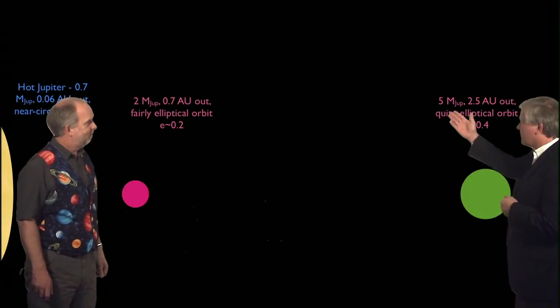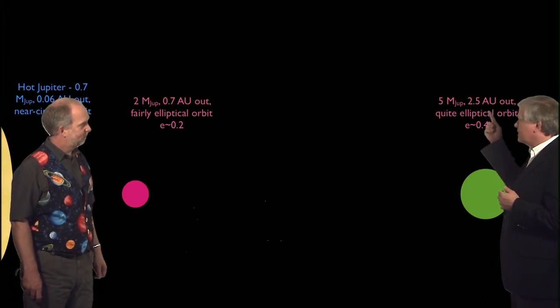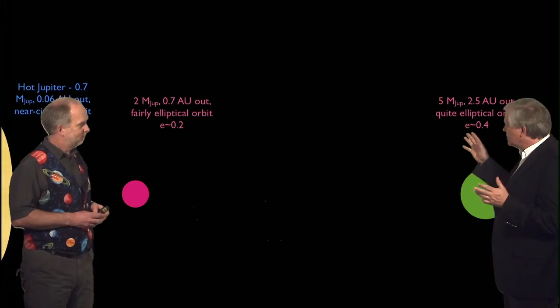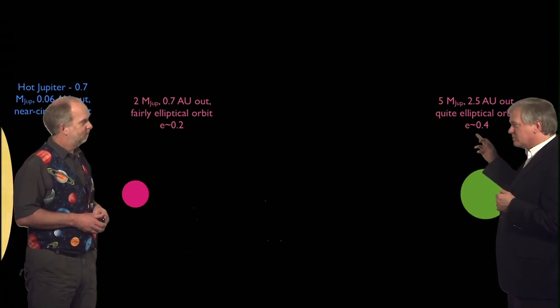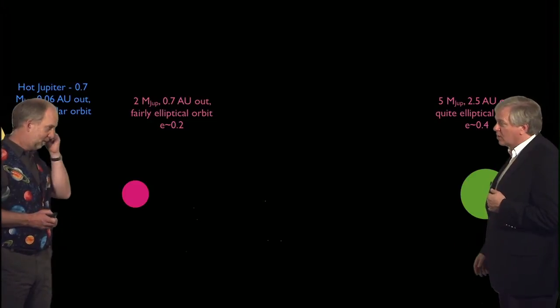Oh, so this is a five times Jupiter, so it's a really big planet. Two and a half AU out, so it's sort of Mars-ish. But it's very eccentric, 0.4, so there's no planet like that, anywhere near that eccentric in our own solar system.